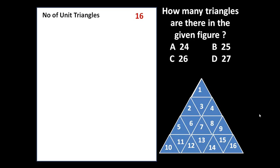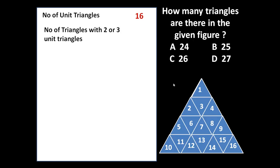A unit triangle means every triangle is made of only one small triangle. Now let us count the number of triangles having two or three unit triangles. Can we make a triangle with two unit triangles together? No, it is not possible. Can we form a triangle taking three unit triangles together? No, it is not possible. So number of such triangles will be zero.